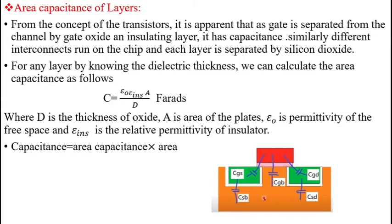Good morning. Today we are discussing area capacitance of layers. In this topic we estimate the capacitance of different layers. From the concept of transistors, it is apparent that the gate is separated from the channel by a gate oxide insulating layer, which has capacitance. Similarly, different interconnects run on the chip and each layer is separated by silicon dioxide.